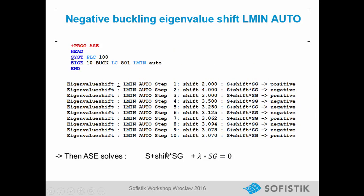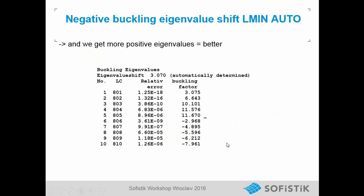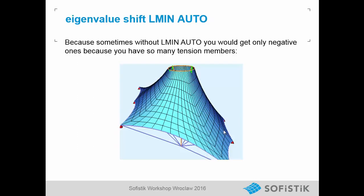To get more positive buckling eigenvalues — which usually are of more interest — we can use an eigenvalue shift with LMIN AUTO. The program ASE then automatically adds a little of the geometric stiffness to the total stiffness and solves the eigenvalue problem where only a part is scaled with the lambda buckling eigenvalue factor. With this we get more positive buckling eigenvalues. In membrane structures or systems with a lot of cables, we always get many negative eigenvalues, so LMIN AUTO is very comfortable.